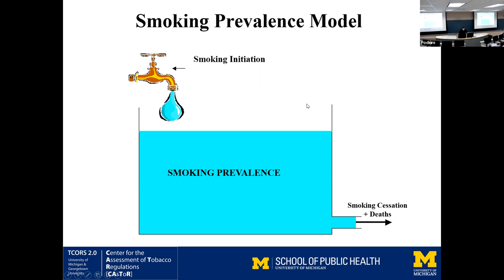It's a good idea when modeling to have an overall concept of what your model is modeling. In general, even though we have a lot of boxes inside, we are trying to keep track of the smoking prevalence by each age group and smoking status — and sometimes gender. That prevalence is like the volume in a tank, and it is regulated by initiation and cessation rates. The outflow is cessation rate plus death.